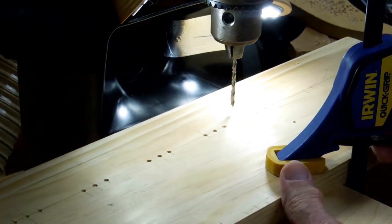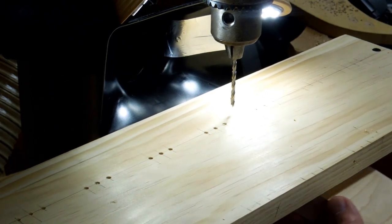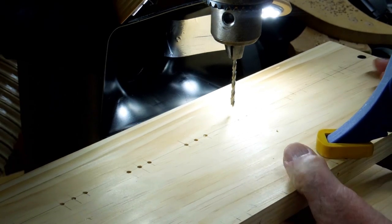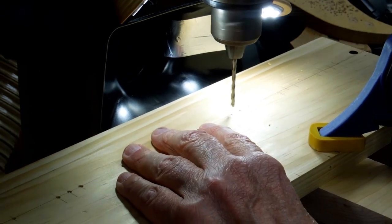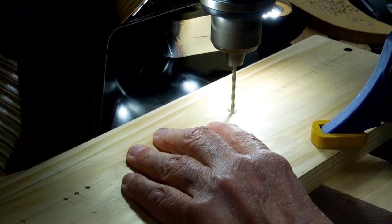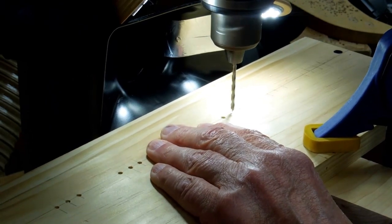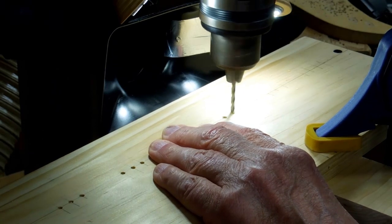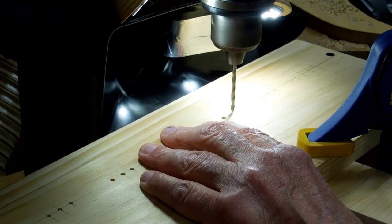These holes are for the pull cords guides. Putting a backer block in here.